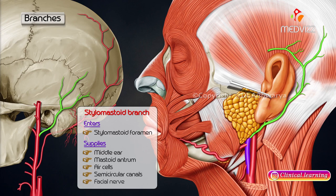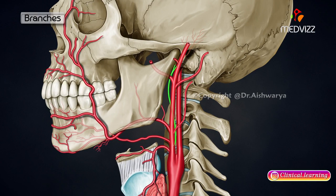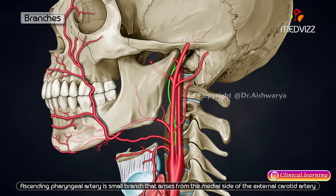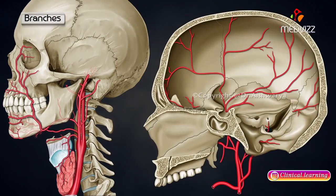The ascending pharyngeal artery is a small branch that arises from the medial side of the external carotid artery, very close to its lower end. It sends meningeal branches to the cranial cavity through the foramen lacerum, the jugular foramen, and the hypoglossal canal.